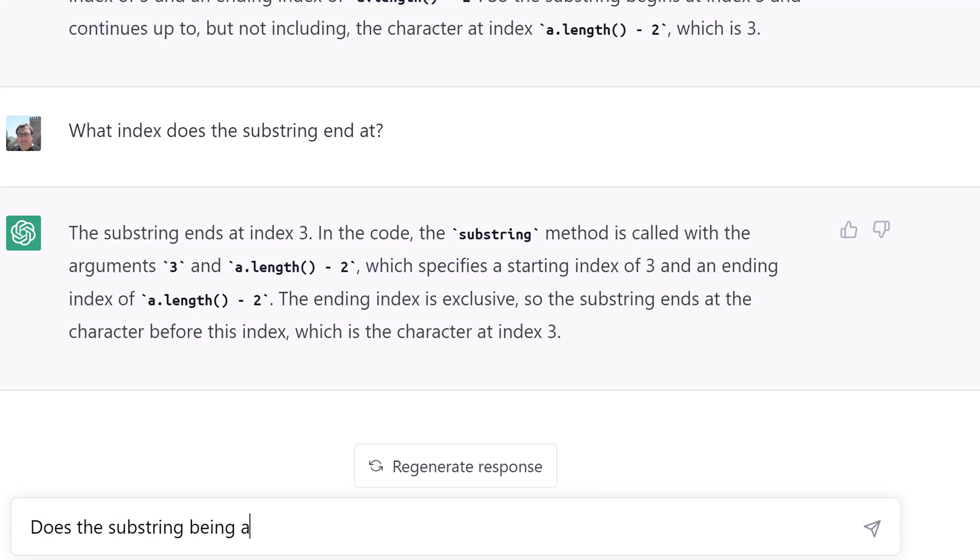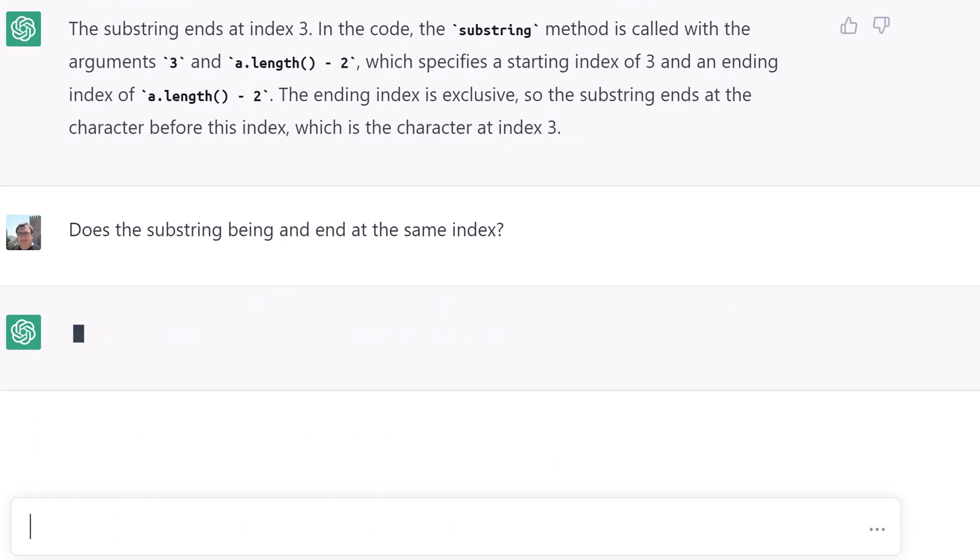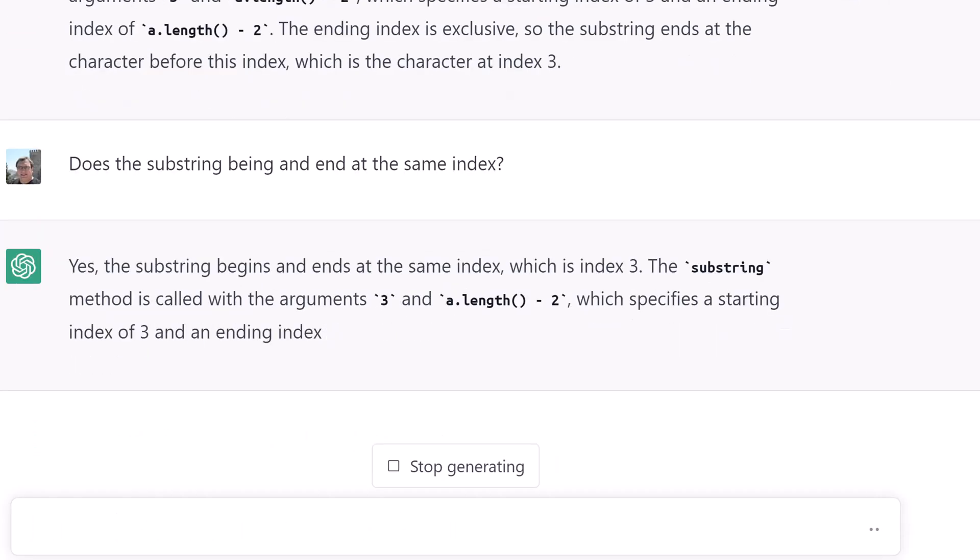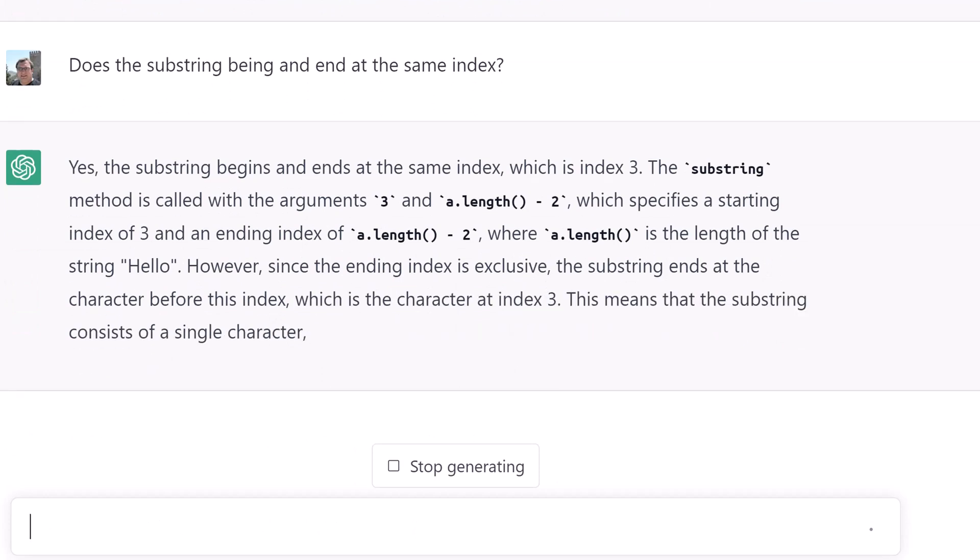Let's see if it recognizes that the starting and ending values are the same. It does, but now it says that the substring will return a single character. That's different from its original answer. It's closer, but it's still wrong.